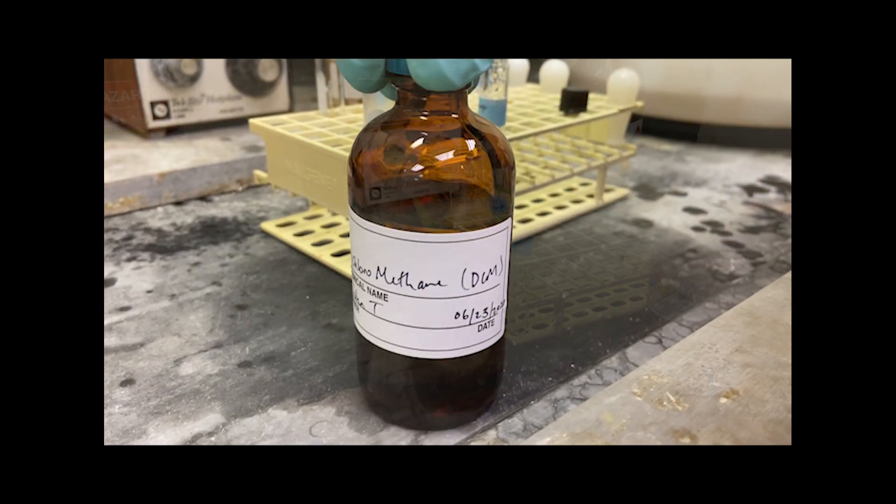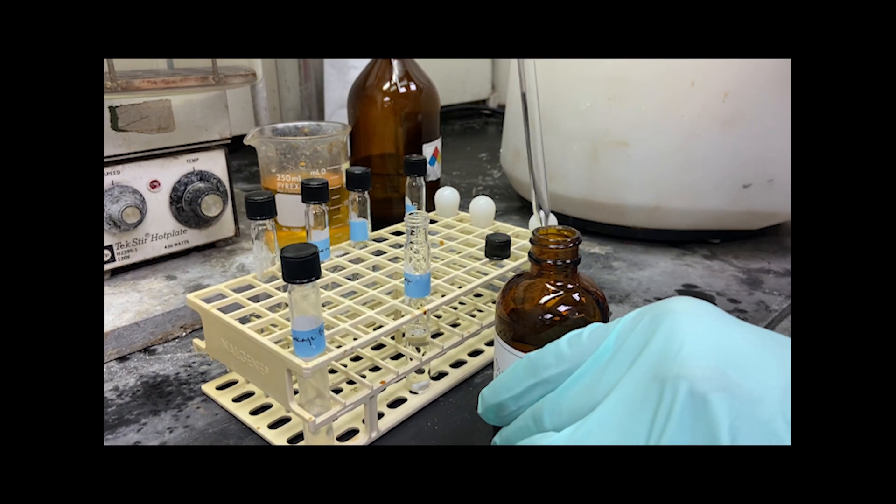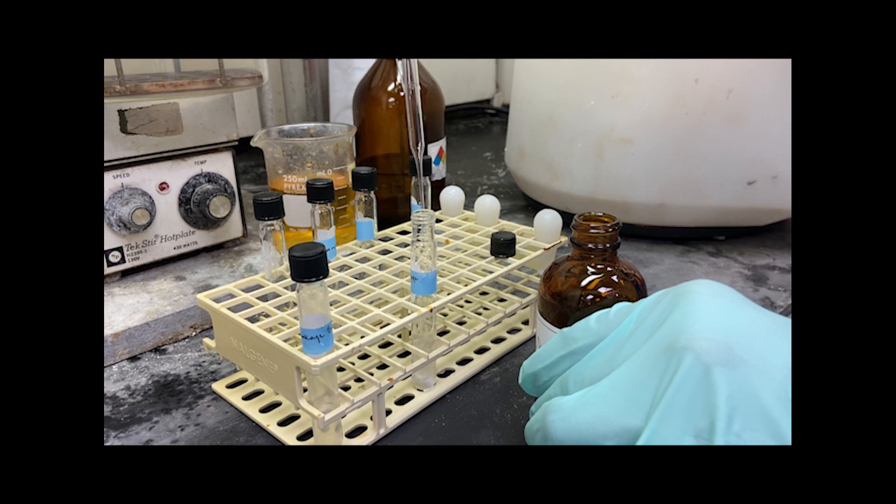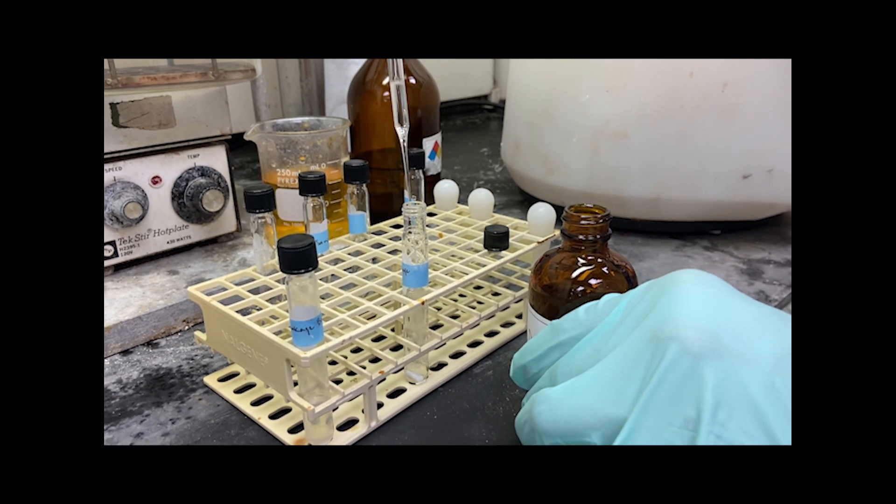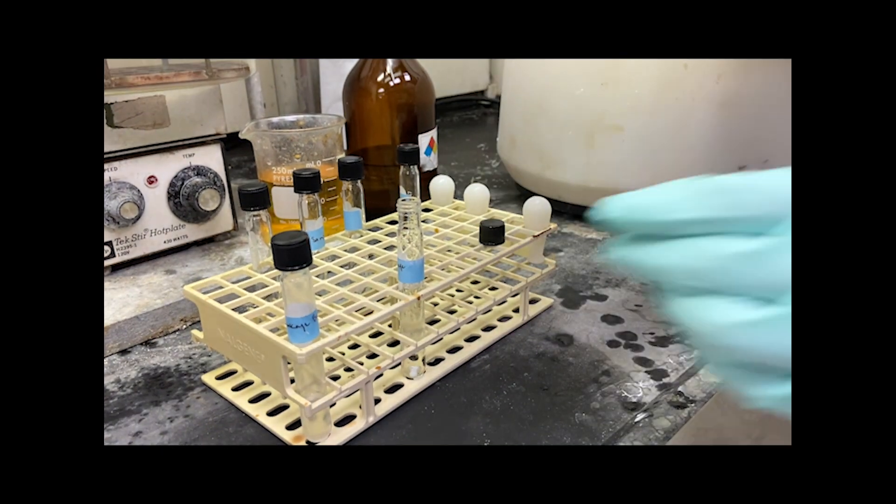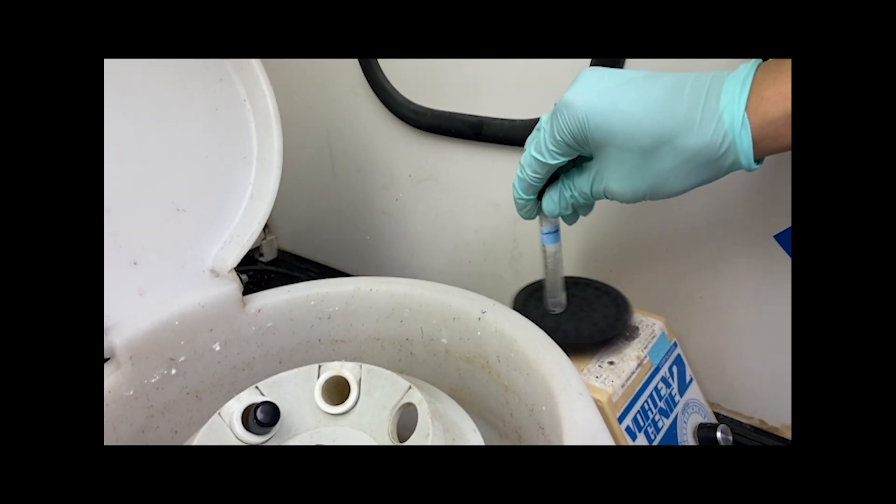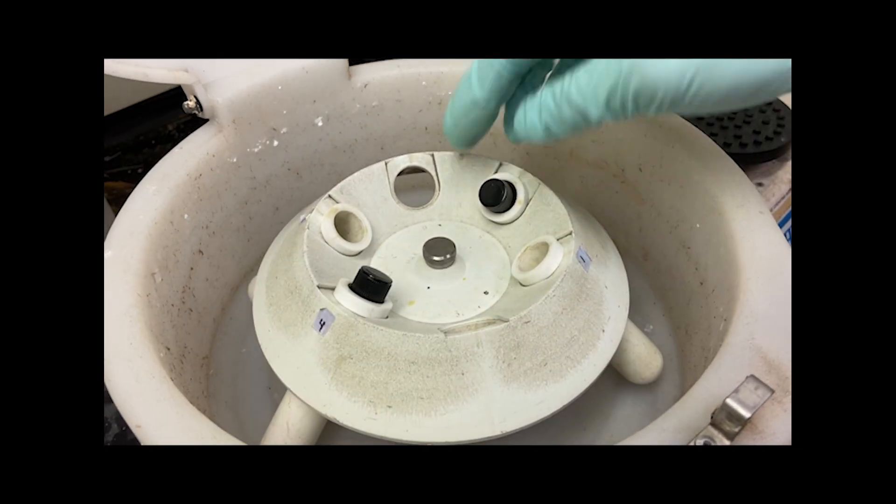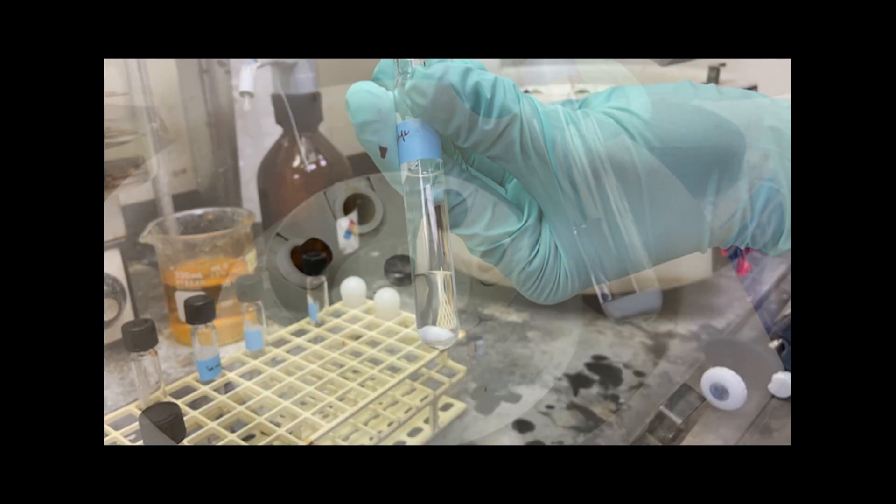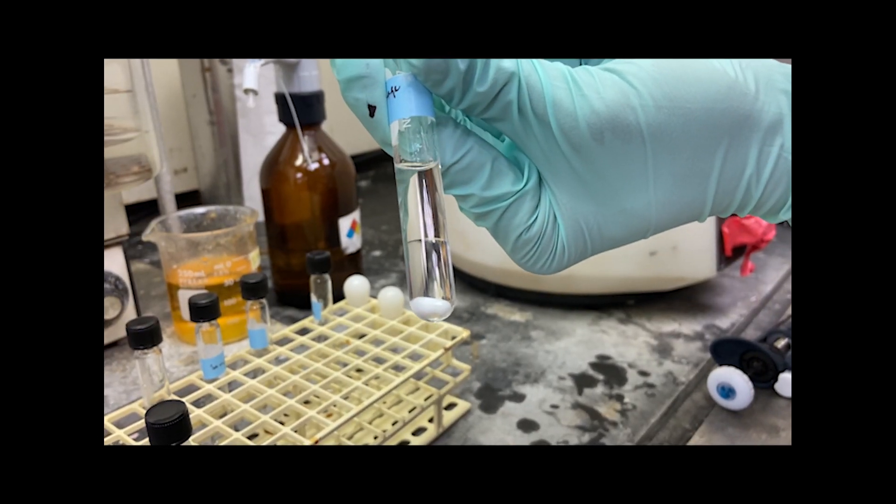Next, 2 milliliters of dichloromethane, or DCM, is added to the solution and the sample is vortexed and centrifuged. Centrifugation should be between 30 seconds to 1 minute. The top water layer is removed, washing the sample.